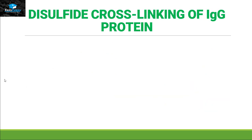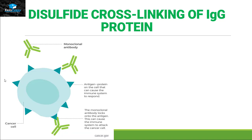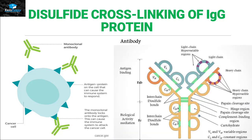Disulfide cross-linkage of IgG protein: IgG is the antibody present inside our body as part of the defense system against bacteria or viruses. Looking closely at the structure of this antibody, we find many inter-chain disulfide bonds highlighted in green. These inter-chain disulfide bonds help maintain the protein's shape and enable it to perform its function.